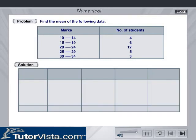Solution. The total number of students is obtained by adding all the frequencies. Therefore, n is equal to 30.